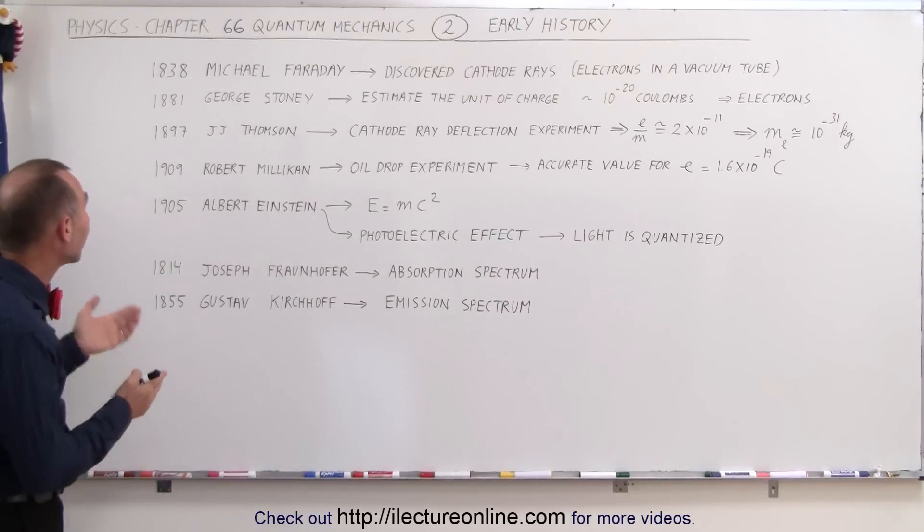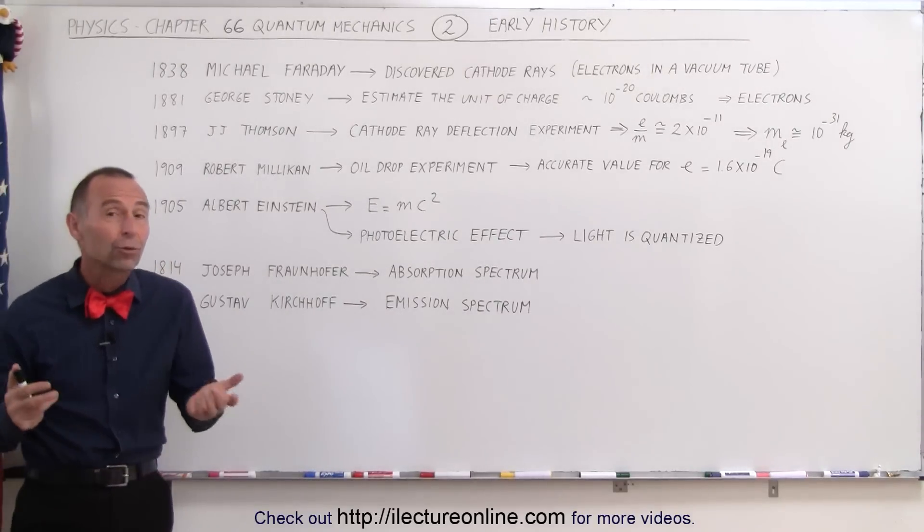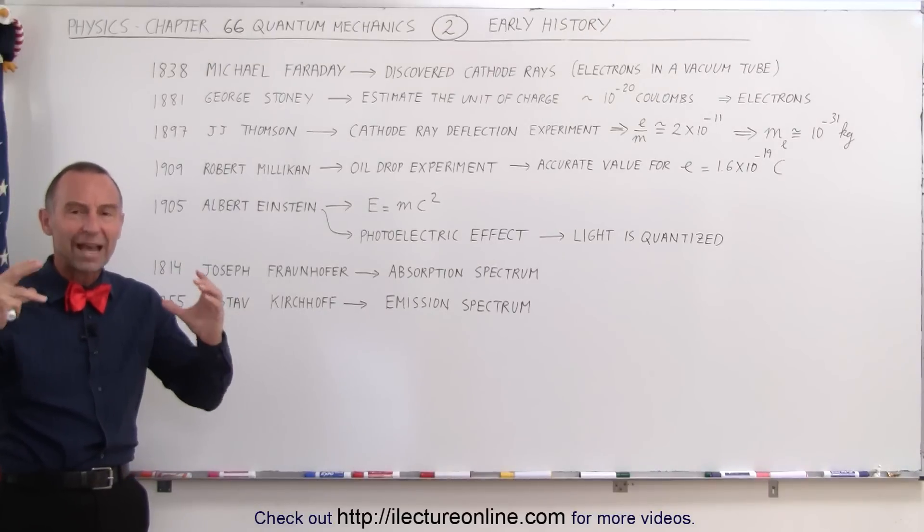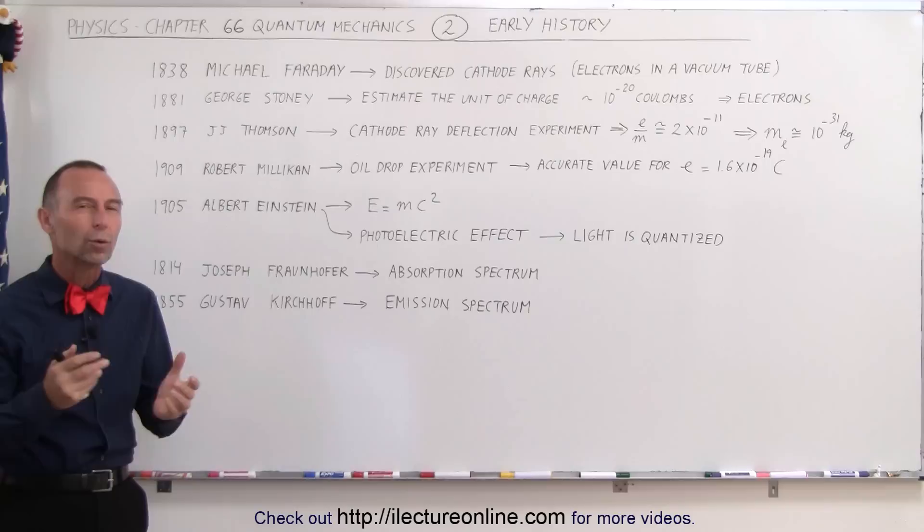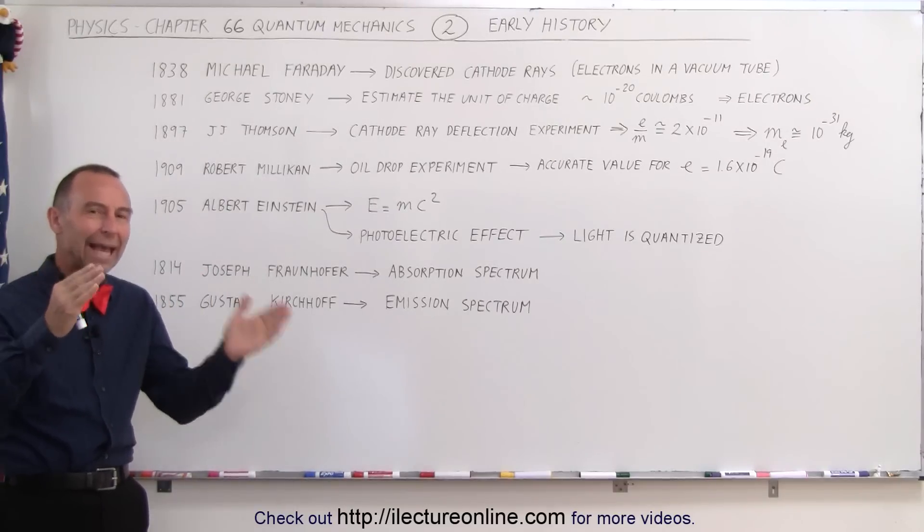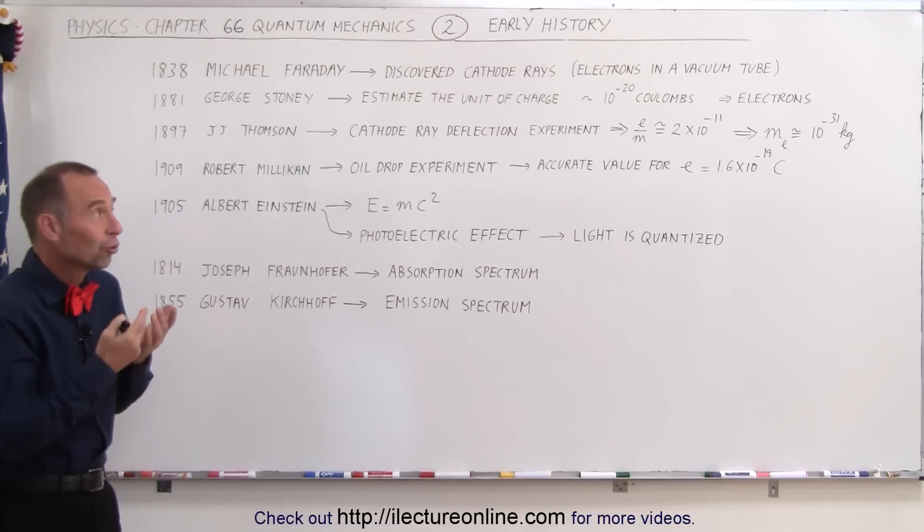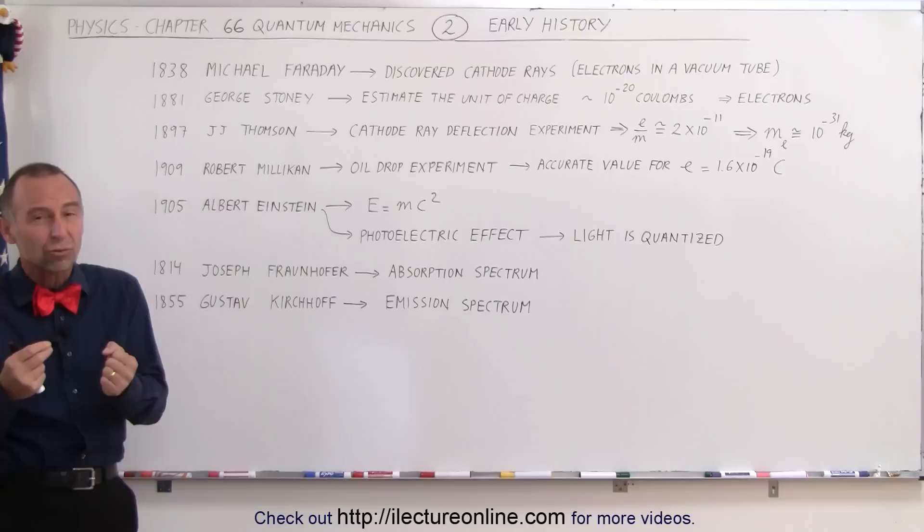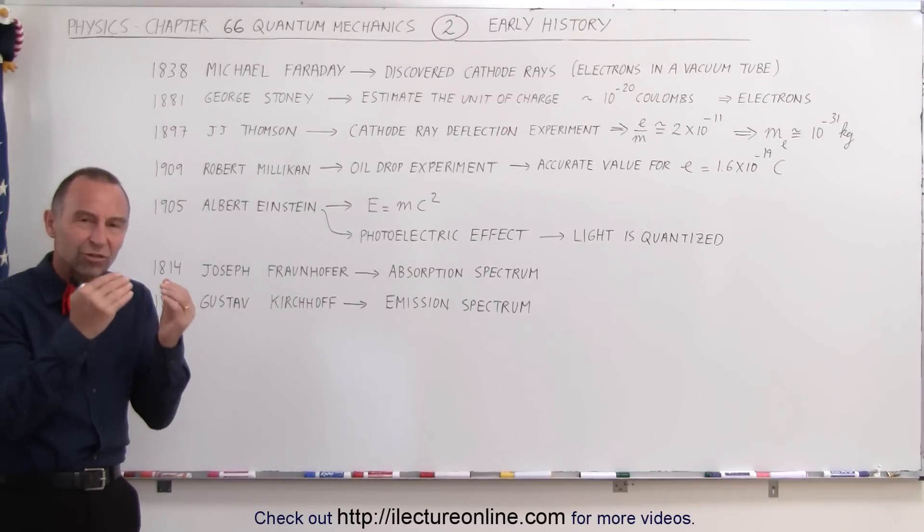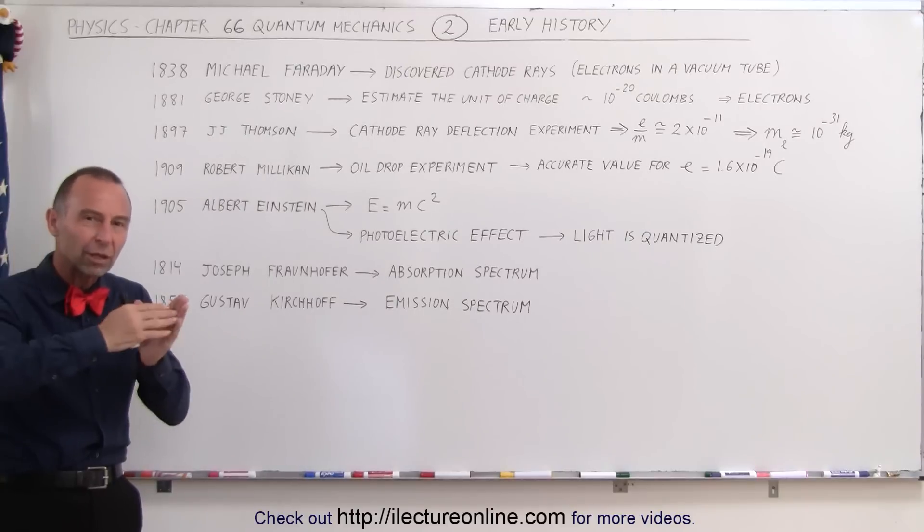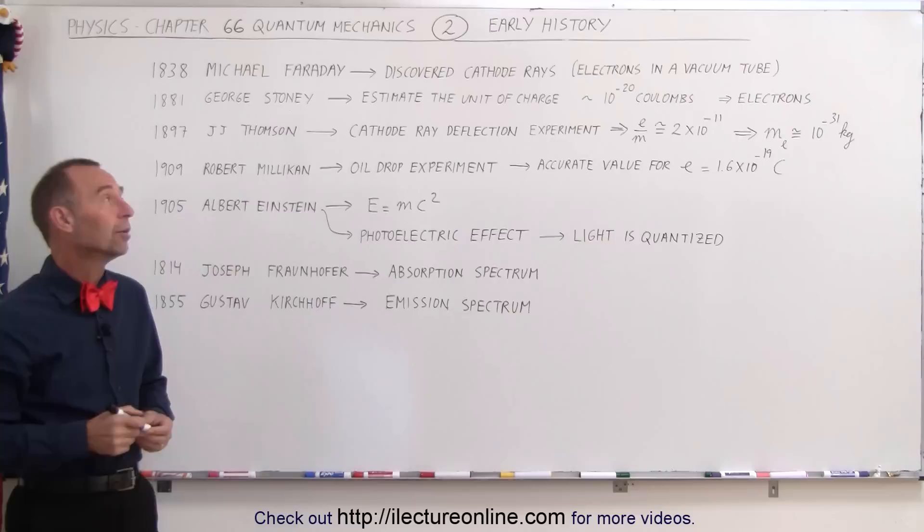For example, when we go all the way back to 1838, Michael Faraday discovered cathode rays. They ran a current through a vacuum tube, a large vacuum tube, and they saw a faint glow. They knew that something happened between the cathode and the anode, and so they called them cathode rays, which of course now we realize are electrons, but at the time they didn't know what they were. They just discovered there was something there going from one plate to another inside this tube, so they called them cathode rays.